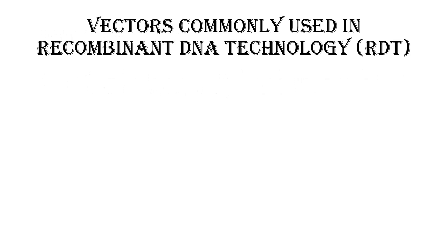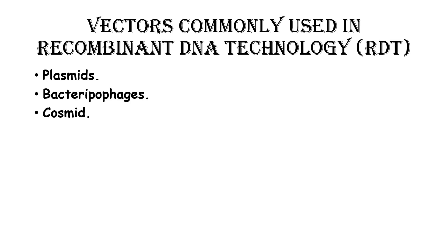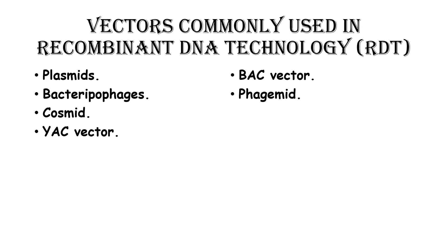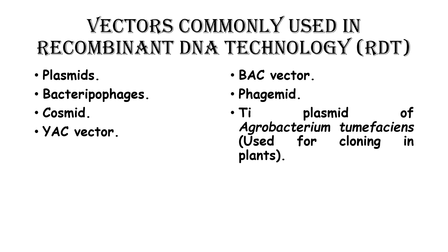Let's talk about the vectors commonly used in recombinant DNA technology. The vectors used are: Plasmids, Bacteriophages, Cosmids, YAC (Yeast Artificial Chromosome), BAC (Bacterial Artificial Chromosome), Phagemid, and Ti Plasmid of Agrobacterium tumefaciens. The Ti plasmid is commonly used for cloning in plants.